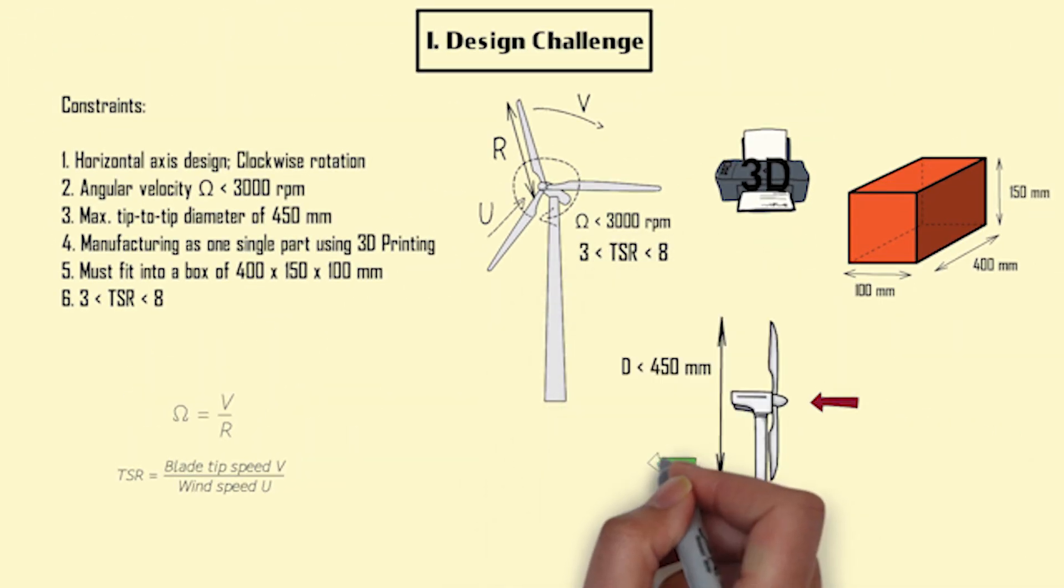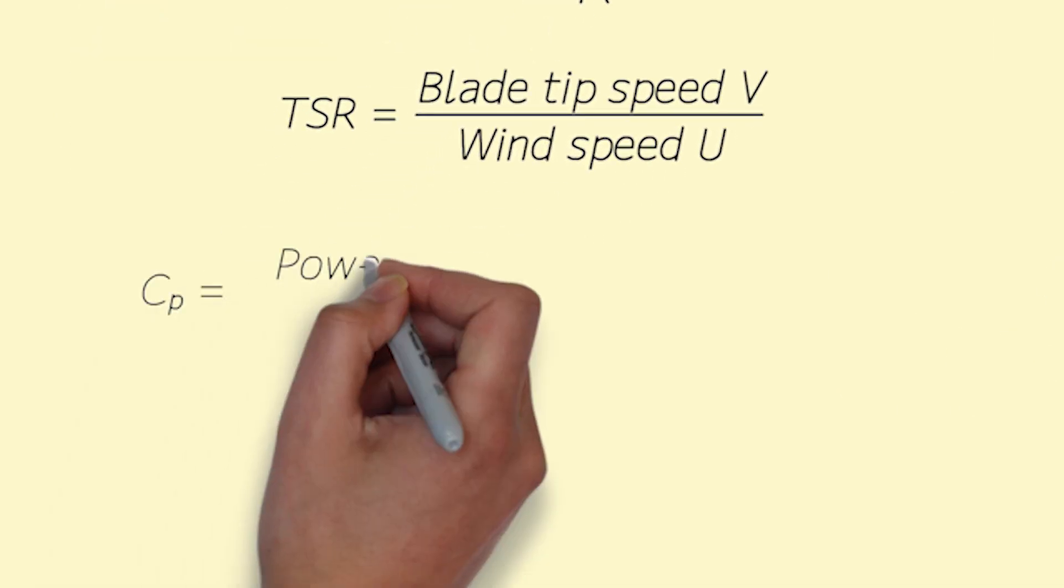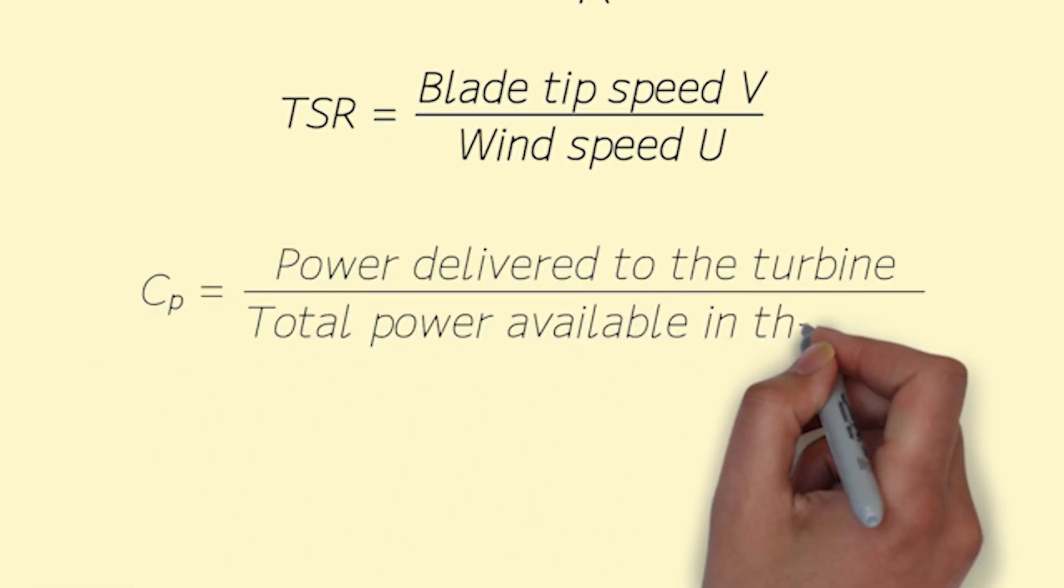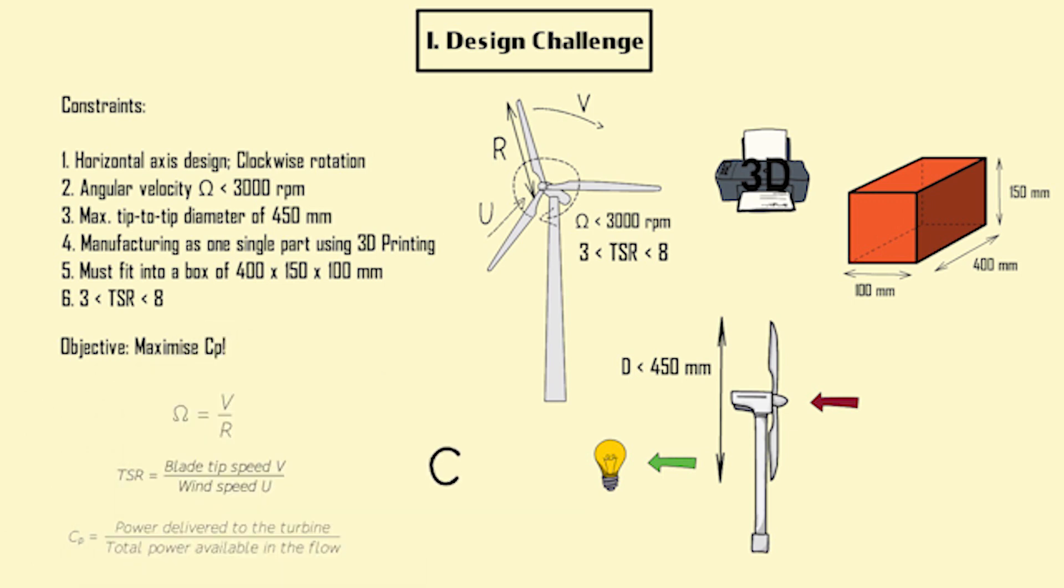The primary objective is to maximize the ratio of the power delivered to the turbine to the power available in the flow, also called the power coefficient.